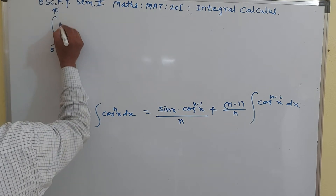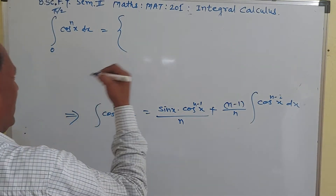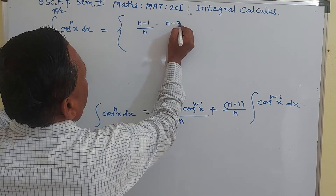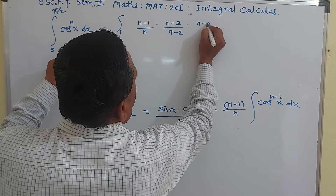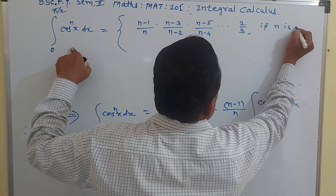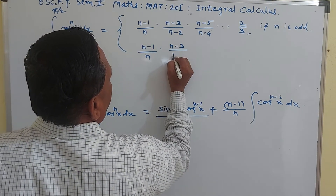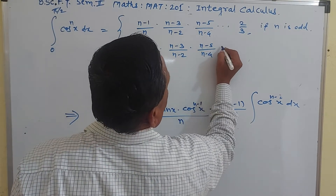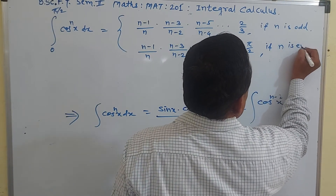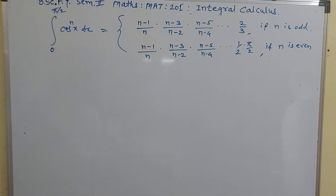The integration from 0 to pi by 2 of cos raised to n x dx follows the same formula as for sin raised to n x dx. When n is odd, the formula is: n minus 1 upon n, times n minus 3 upon n minus 2, times n minus 5 upon n minus 4, and so on down to 2 upon 3. The results of examples are again the same.